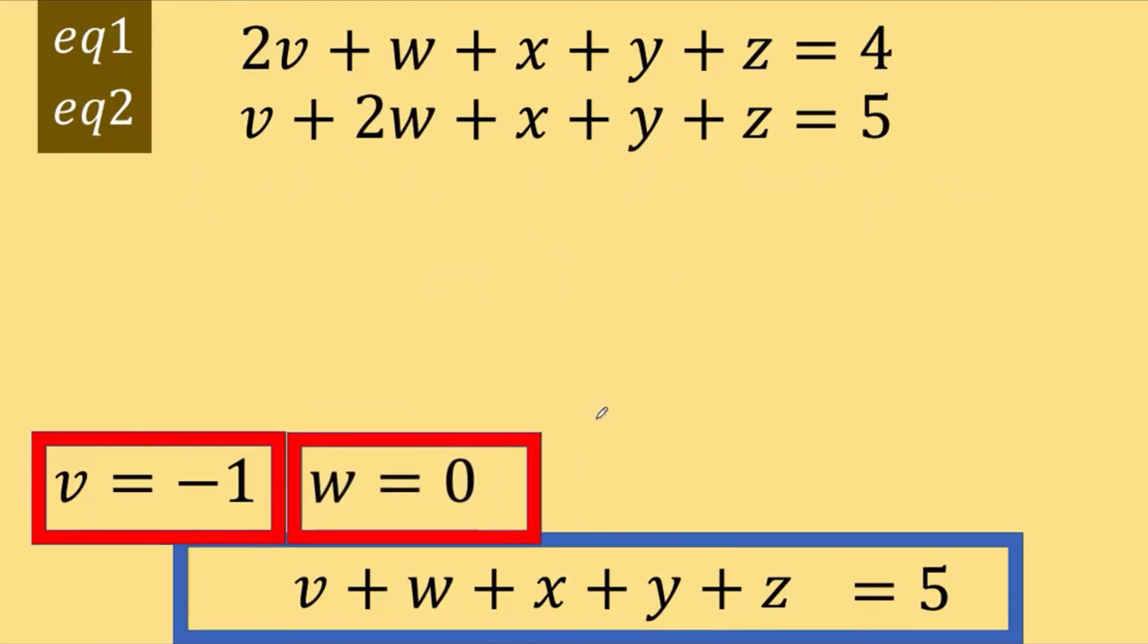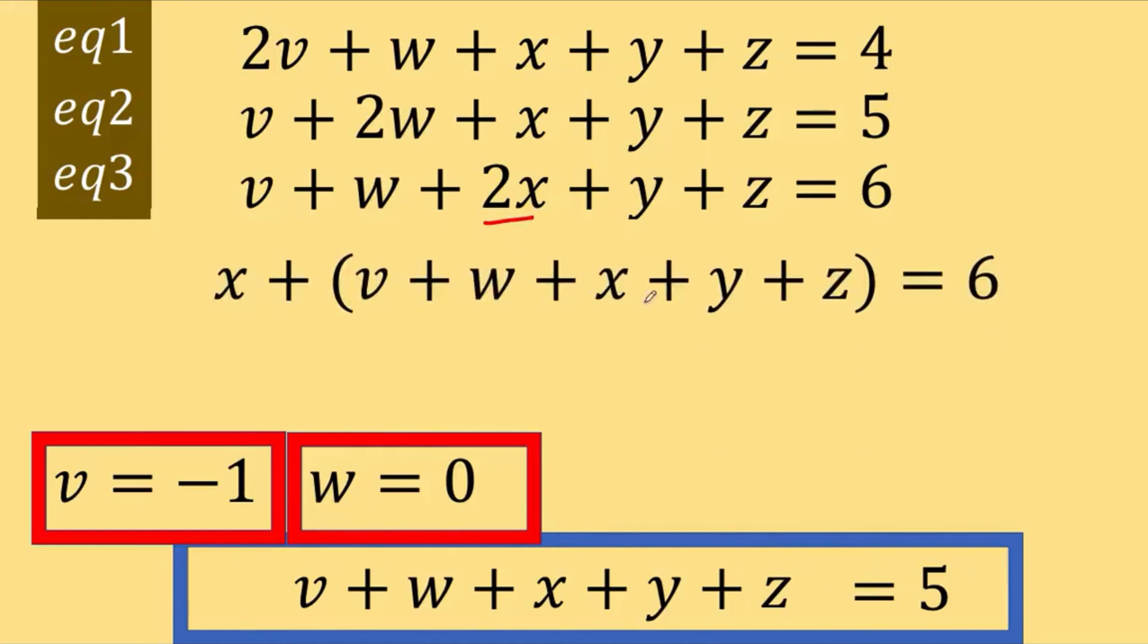Then let's go to equation number 3. This was equation number 3 in the given. And let's split this 2x as x plus x again, like this. And this part inside the parentheses is equal to 5. And so, we have x plus 5 equals 6, or x is equal to 6 minus 5 equals 1. So, the value of x is 1. Let's put that aside also.